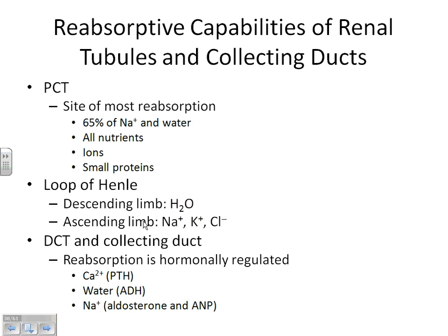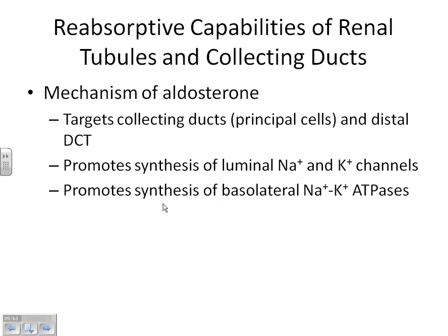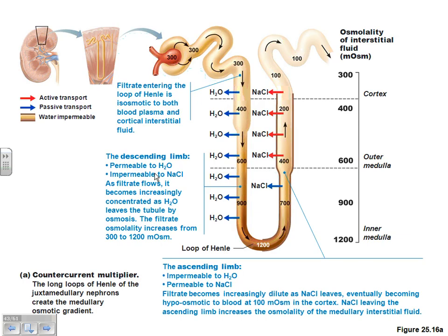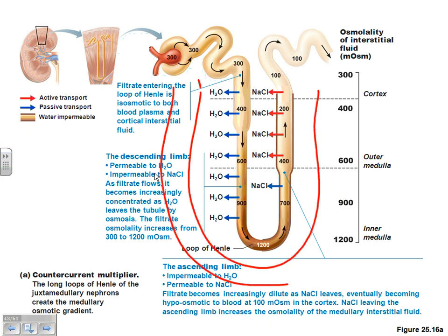It sounds horrible, but it means countercurrent — because in our body we don't just have the loop of Henle; we have a blood vessel all wrapped around it. If this is a cortical nephron, that's just the rest of the peritubular capillaries. If this is a juxtamedullary nephron, what is this set of capillaries called? The vasa recta. The countercurrent multiplier mechanism seems to have a larger effect when we're talking about the juxtamedullary nephron — the one with that huge long loop of Henle and the vasa recta wrapped around it.